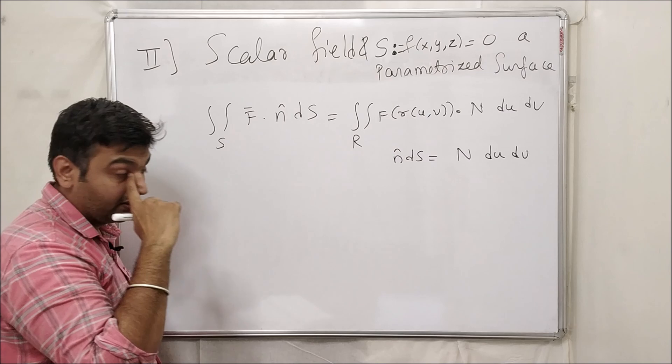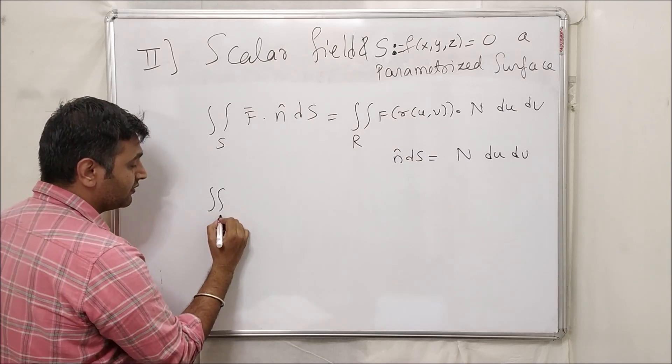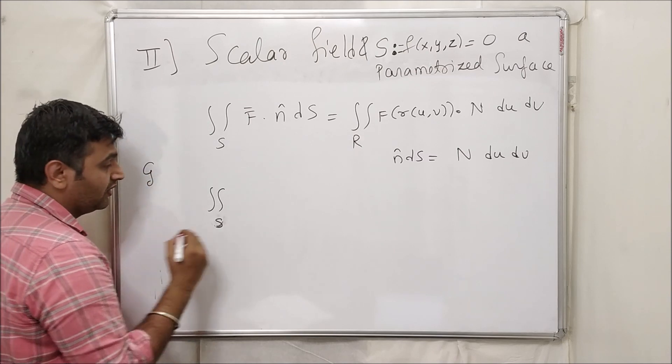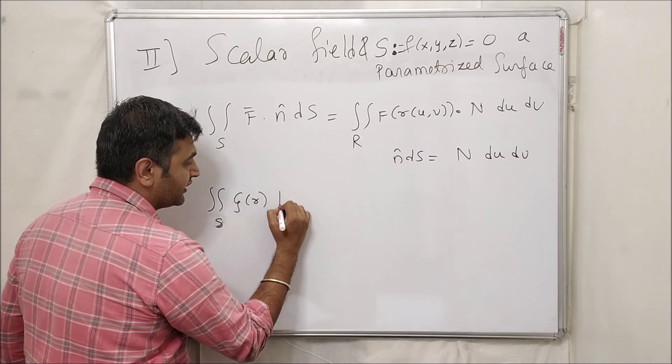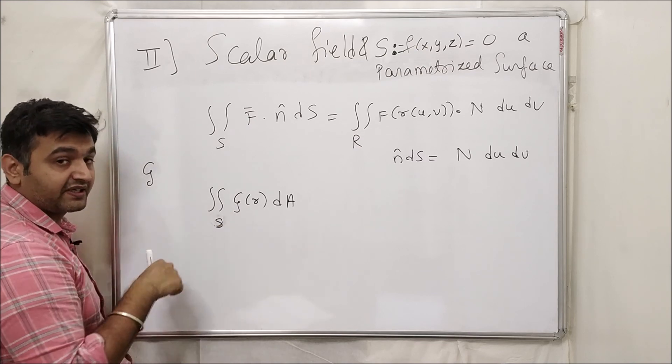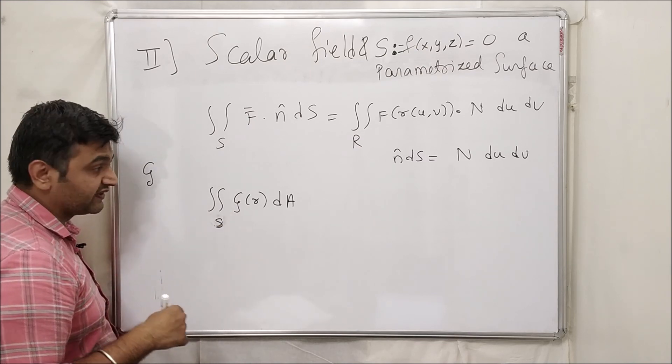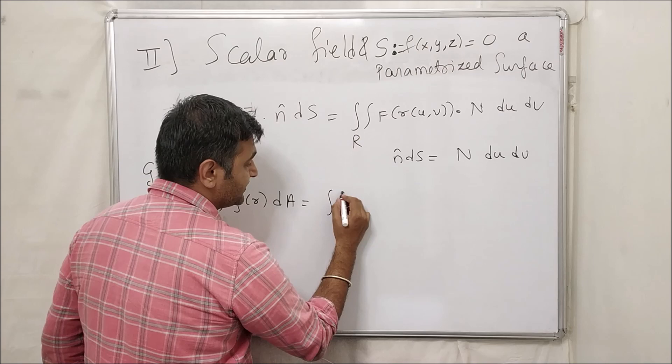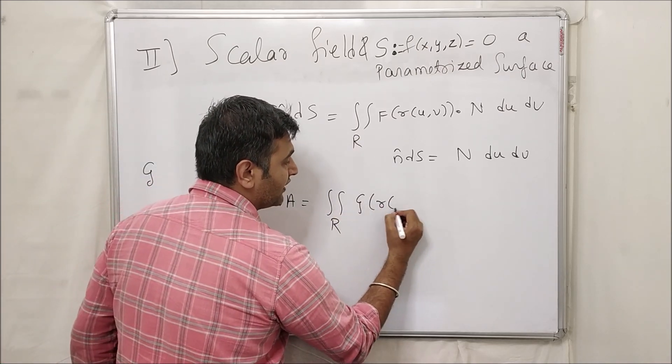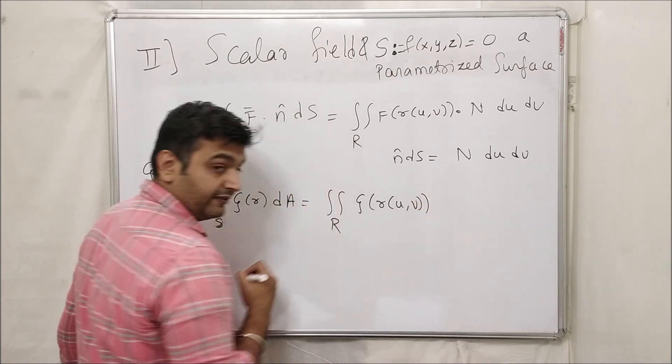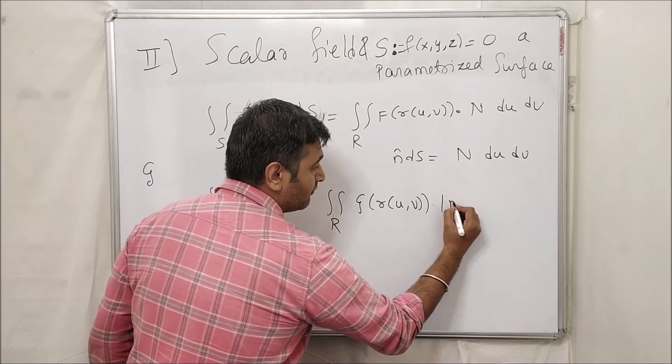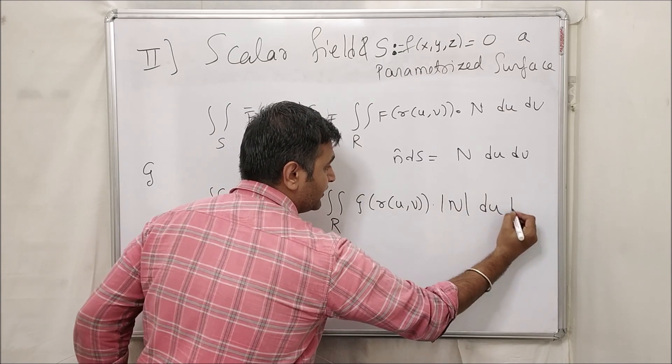This is what we had. Now when we have a scalar field, let me, let G be a scalar field. So this is the notation that you always see: G of R dA. R is what? It's the parametrization. I have parametrized our surface. So what is this? This is equal to over R, so now we have G of R, G of R means G of R of uv.